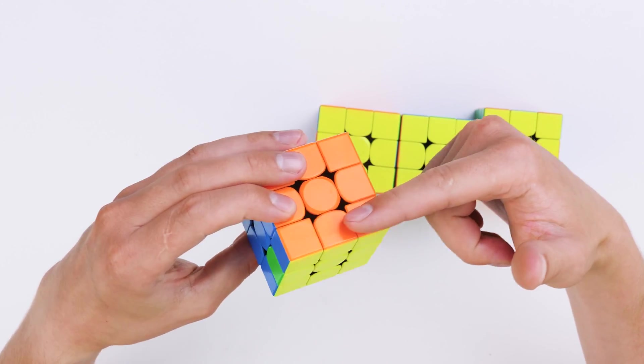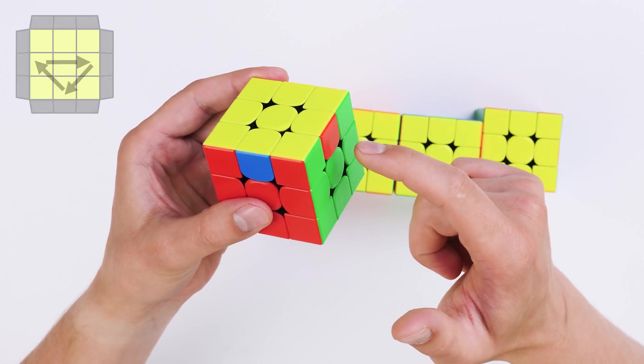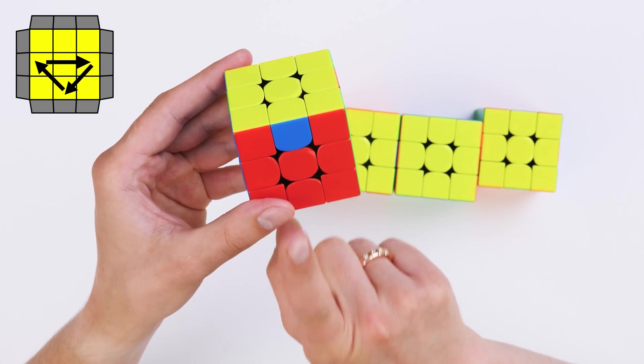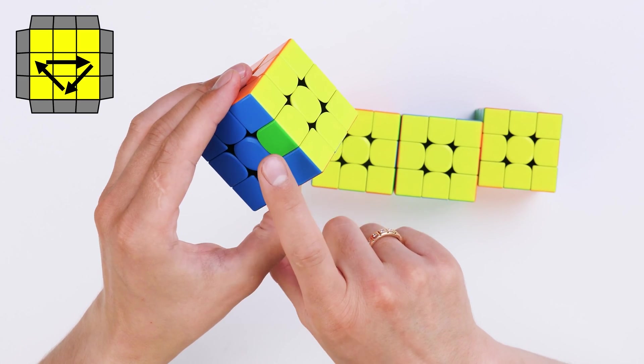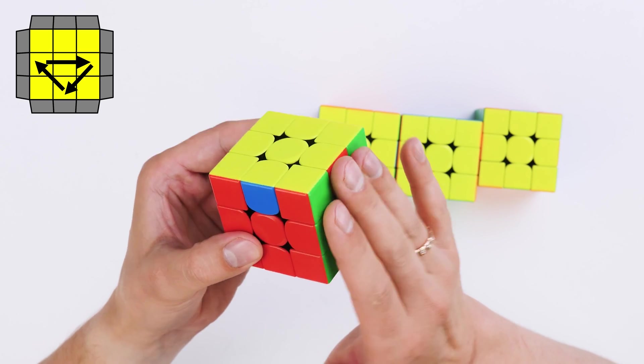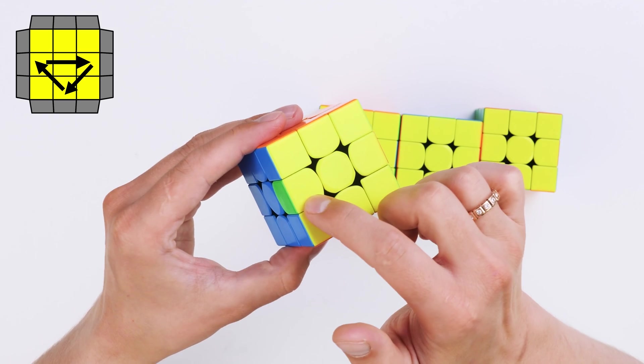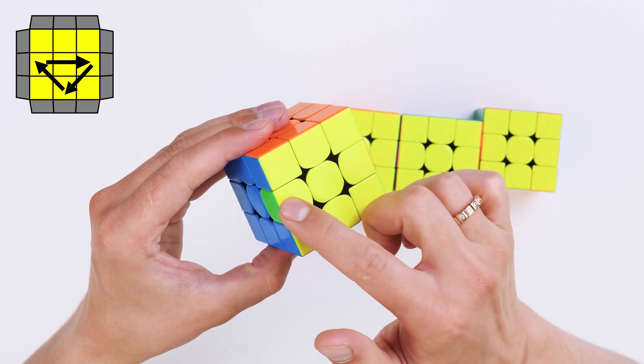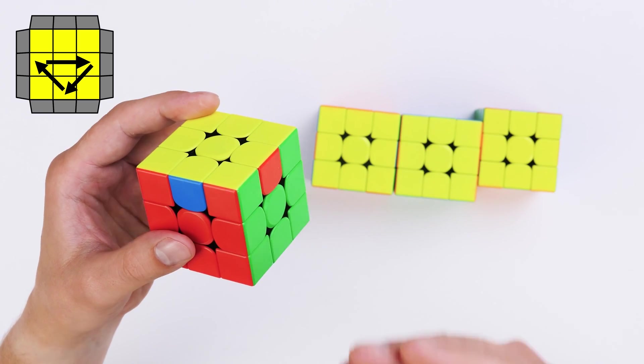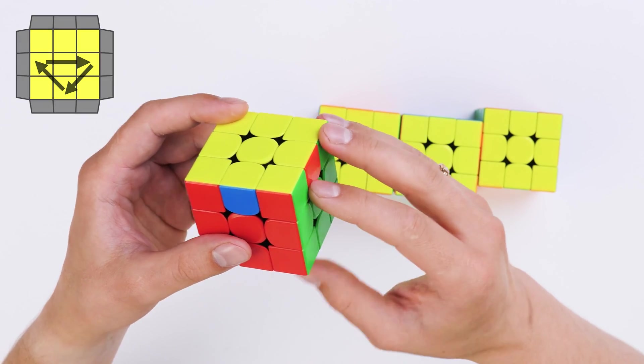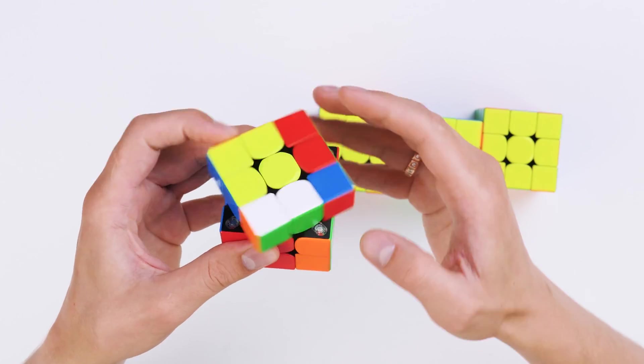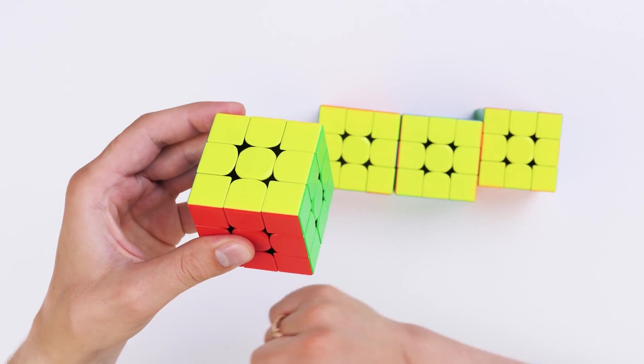red will go to the red side, blue to the blue, green to the green. That is, you need to once move all these three parts clockwise. So, in this case, we need just one U-perm. A cube is solved.